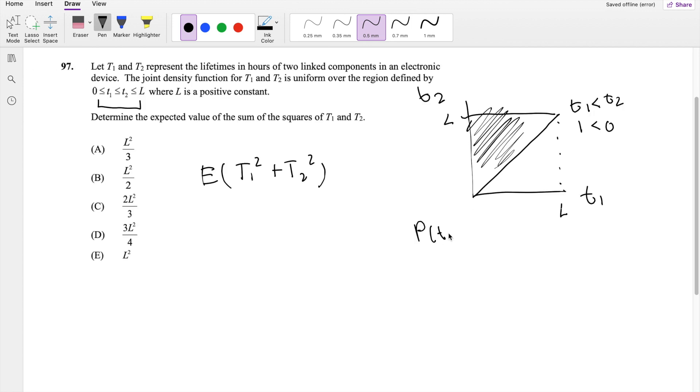The probability distribution function is equal to 1 over area of this square. So then the area is going to be 1 half, right? 1 half base, which is L, times height, which is L. So then this is equal to L squared over 2 is the area. So then the probability function, T1, T2, is going to be equal to 2 over L squared.